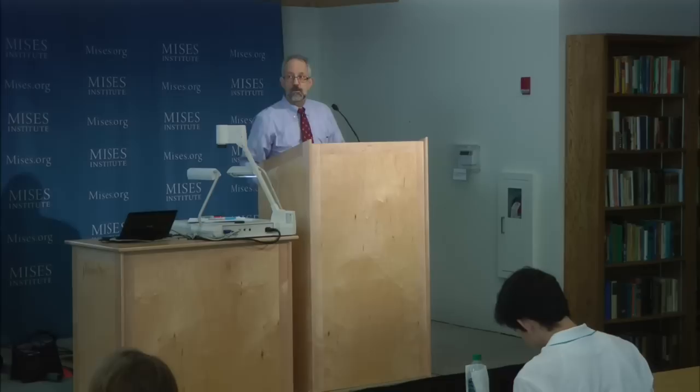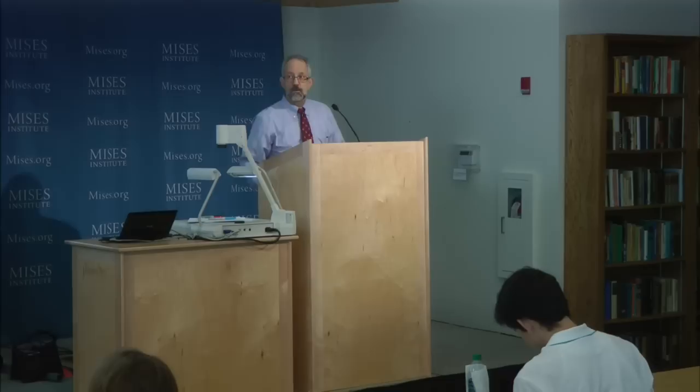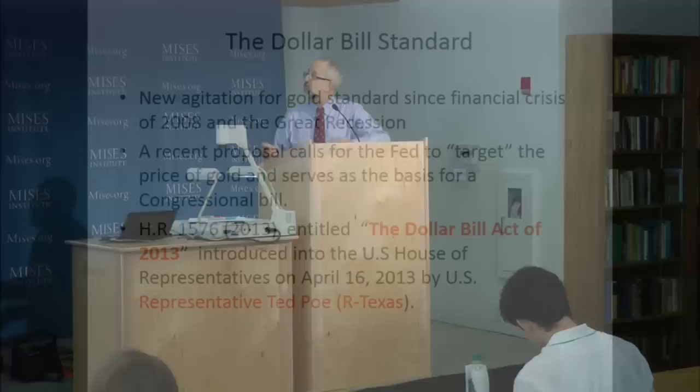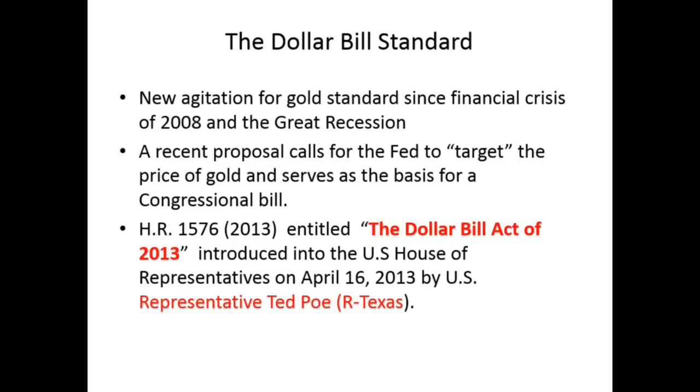So now here we are today. We've had the financial crisis, the Great Recession, a very slow recovery, and people are starting to look around for alternative monetary arrangements — quantitative easing, forward guidance of interest rates, all this nonsense the Fed has been spouting since 2008. None of this stuff has worked. So understandably there are people who want a restoration of a gold standard. There's a recent proposal that wants the Fed to target the price of gold — the basis of the Dollar Bill Act of 2013, introduced by Representative Ted Poe of Texas. It's a totally phony gold standard, worse than Bretton Woods.